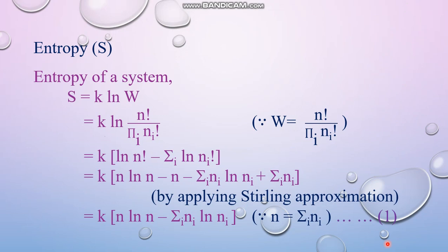That relationship is S equals k ln W. The thermodynamic probability W has the expression N factorial over the product over i of N_i factorial, as we know from previous lectures. Let's replace this value in place of W, so we get k ln of N factorial over the product over i of N_i factorial.